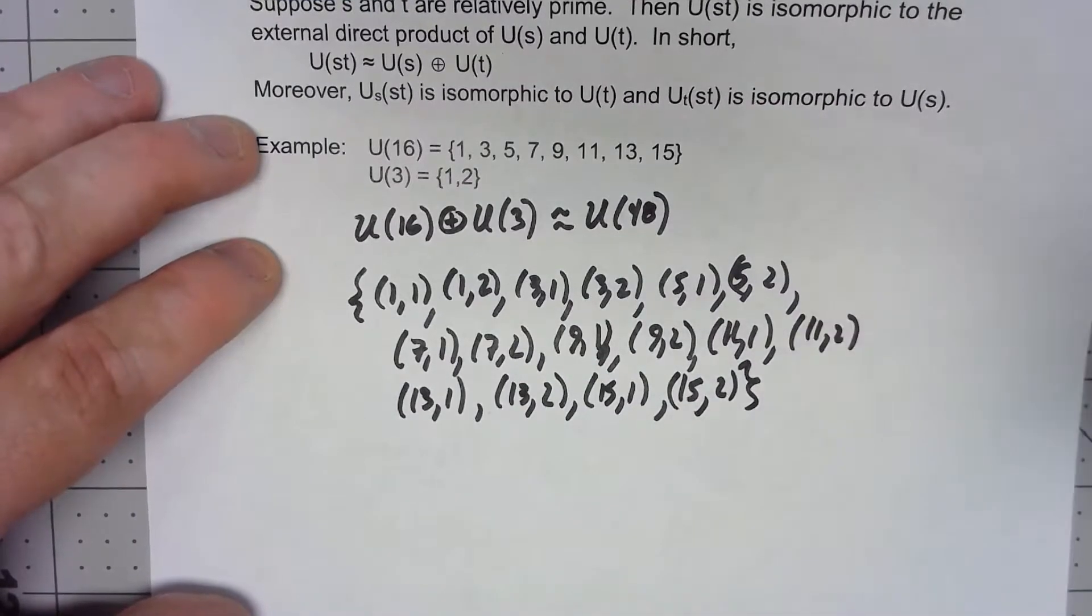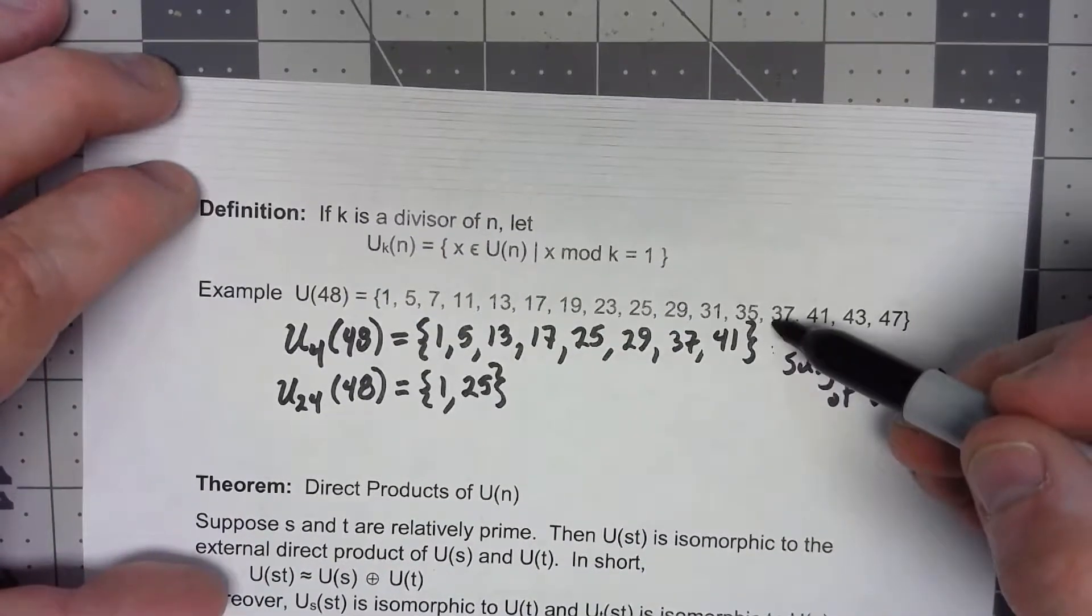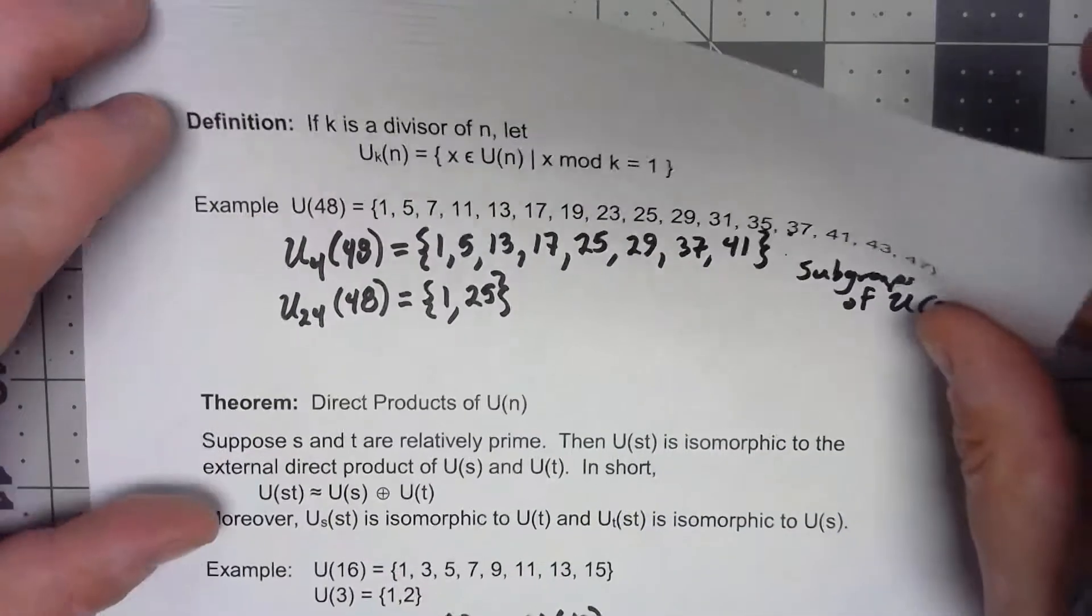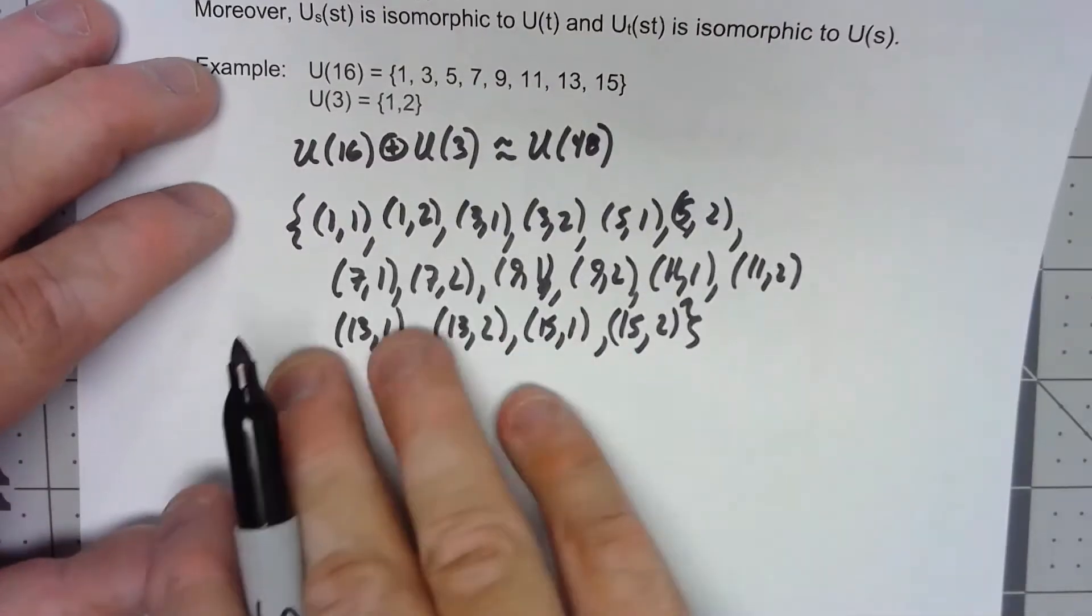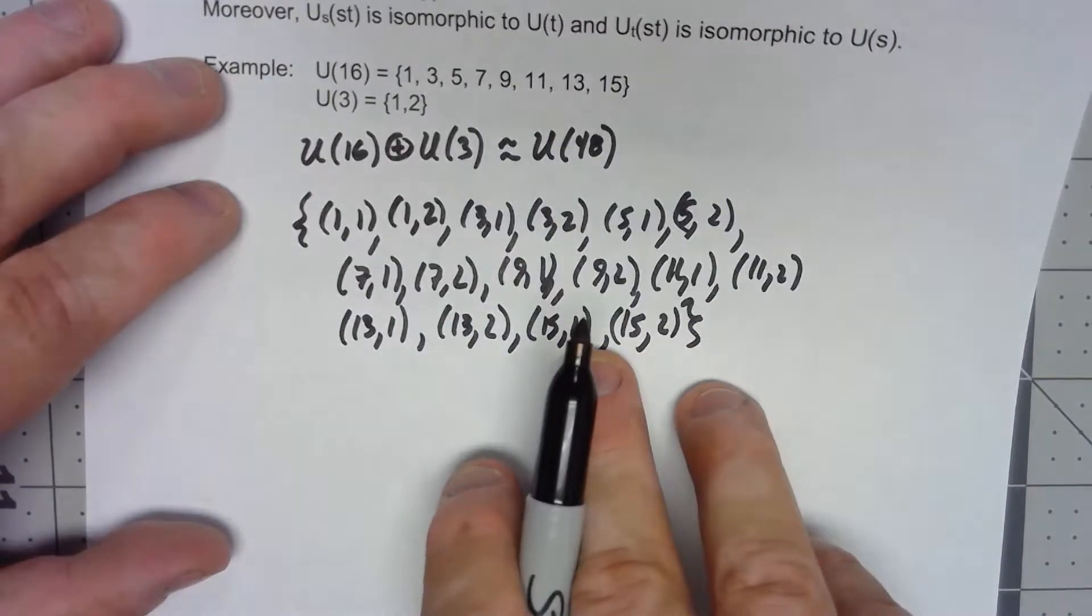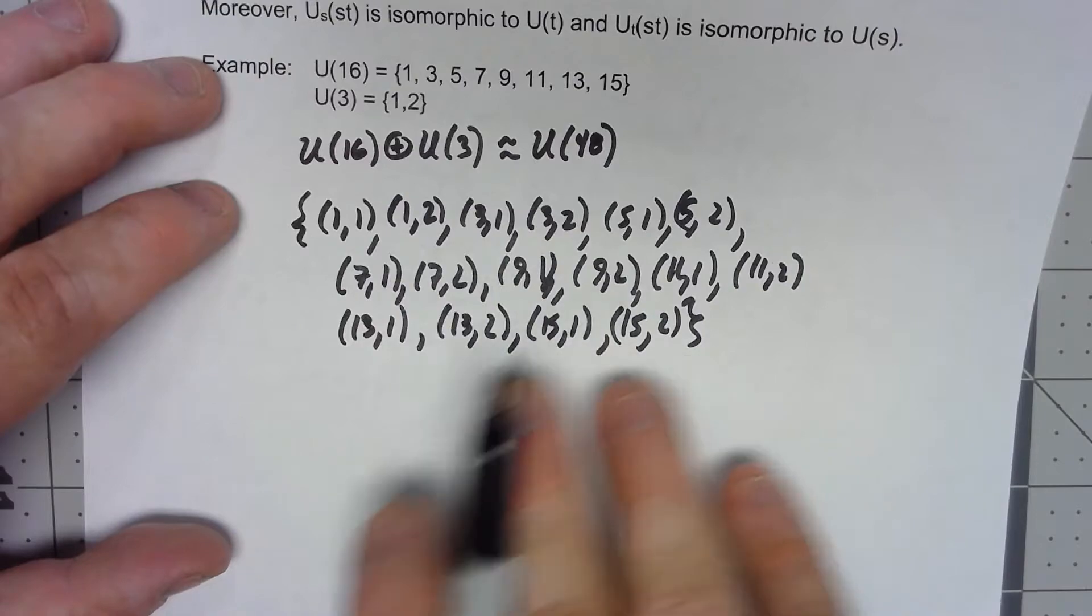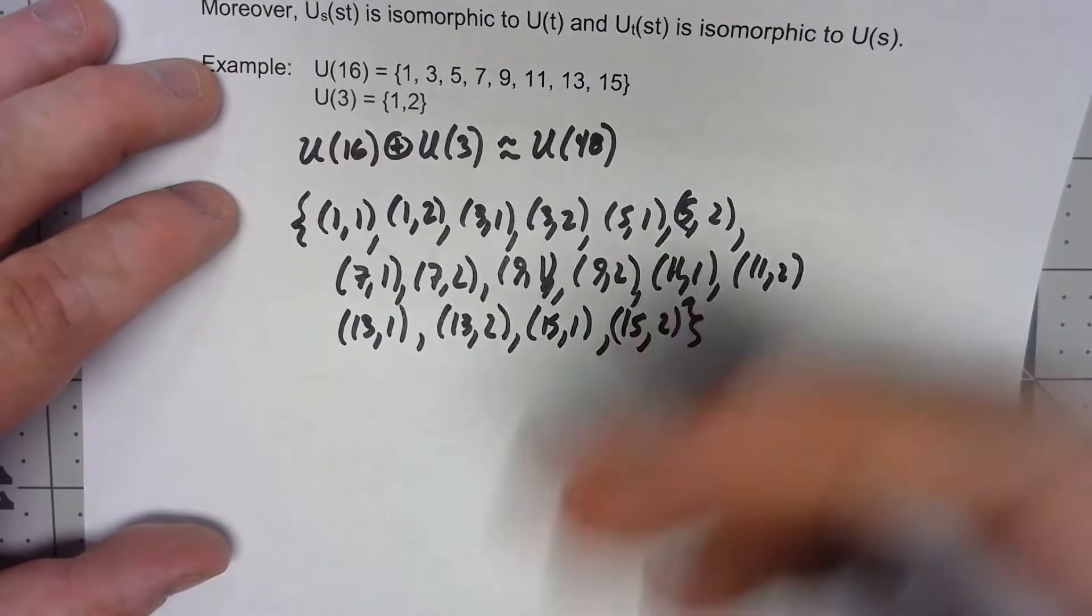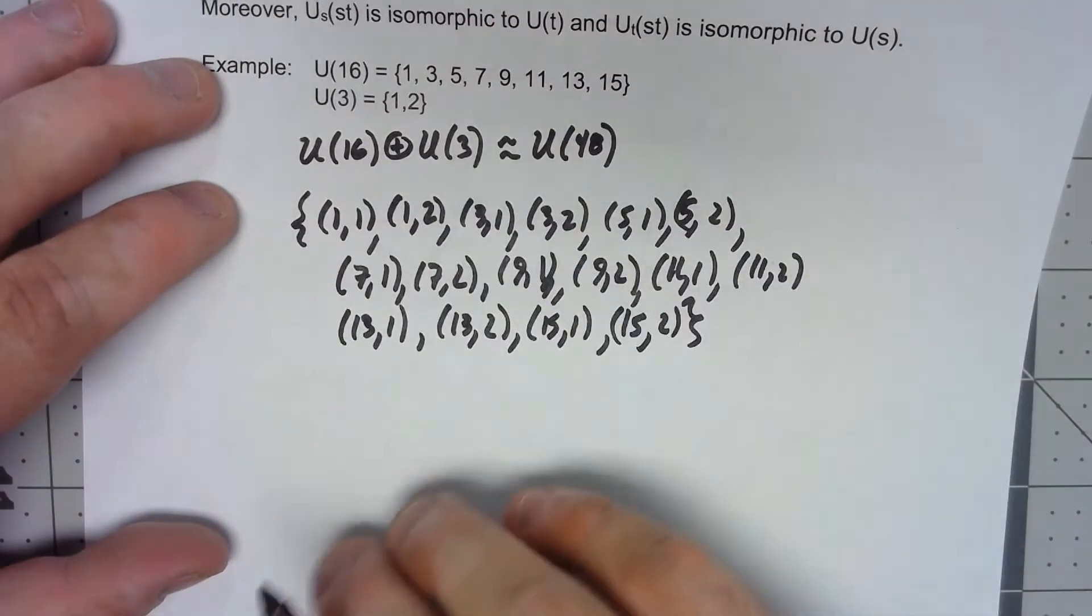Now showing that this is isomorphic to this group up here, it's not obvious. It is obvious that they have the same number of elements. If we just count there are 16 elements in U(48). There are 16 elements in this so at least they have the same number of elements. But then showing that they're isomorphic we've got to find an isomorphism and establish that it's true. We'll try to do that in the proof and see how that works.